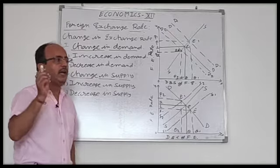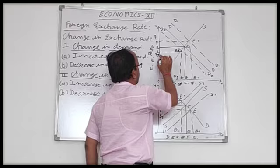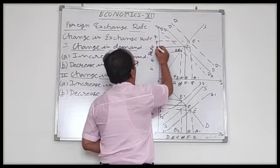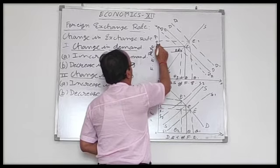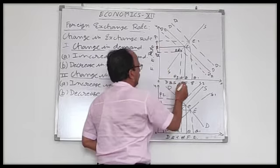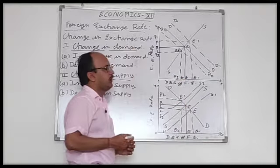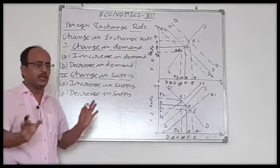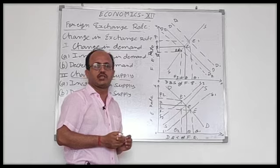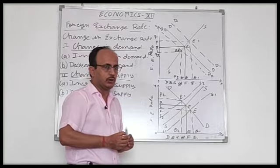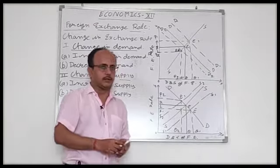At this equilibrium key point, the foreign exchange rate is OR and the foreign exchange equilibrium quantity is OQ. So the equilibrium foreign exchange rate is OR and the equilibrium quantity is OQ.